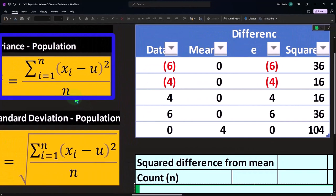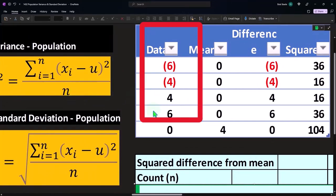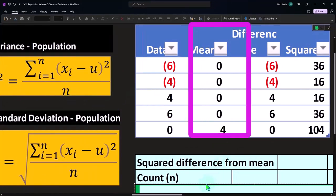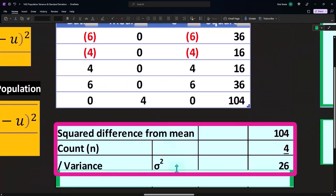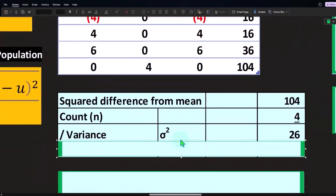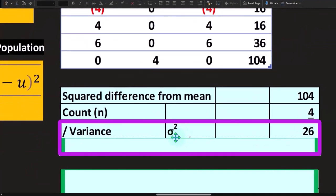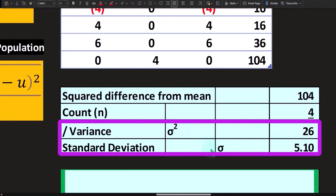I'm going to divide by n—the count is one, two, three, four. So 104 divided by four gives us the variance, which is represented by sigma squared: 26. Then I can take the square root of that. Taking the square root of 26 gets us to 5.10.